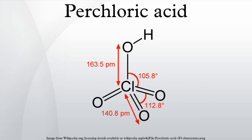Anhydrous perchloric acid is an oily liquid at room temperature. It forms at least five hydrates, several of which have been characterized crystallographically. These solids consist of the perchlorate anion linked via hydrogen bonds to H2O and H3O cations. Perchloric acid forms an azeotrope with water consisting of about 72.5% perchloric acid. This form of the acid is stable indefinitely and is commercially available.